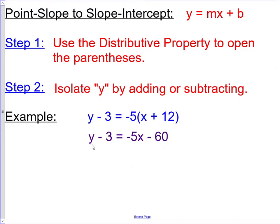Our next step is to isolate y. They're subtracting 3, so we're going to do the inverse and add 3 to both sides. That'll isolate y and leave us with y = -5x - 57. So we went from point-slope to slope-intercept form.